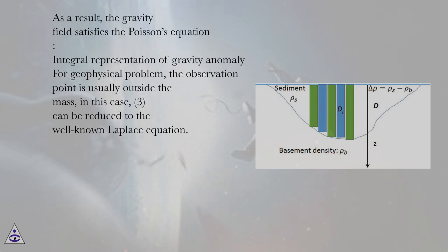As a result, the gravity field satisfies the Poisson's equation. Integral representation of gravity anomaly. For geophysical problem, the observation point is usually outside the mass. In this case, (3) can be reduced to the well-known Laplace equation.